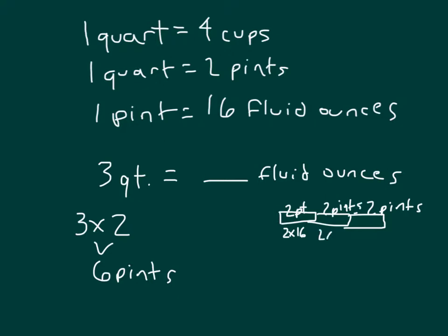So we have 2 times 16, 2 times 16, and 2 times 16 again. 2 times 16, 2 times 16, 2 times 16 would actually be 6 times 16. That's what we have here. Multiply that together to get 96 fluid ounces.